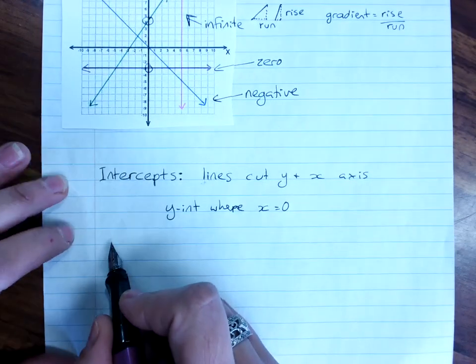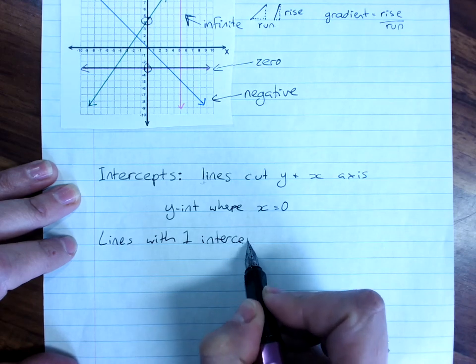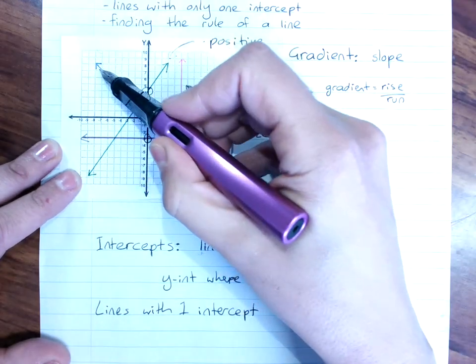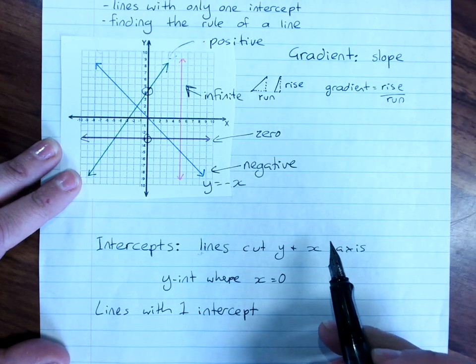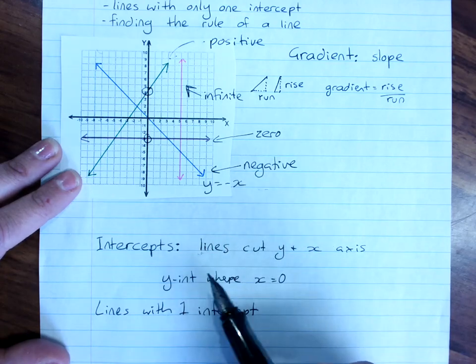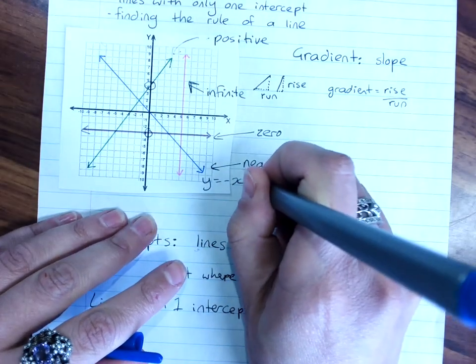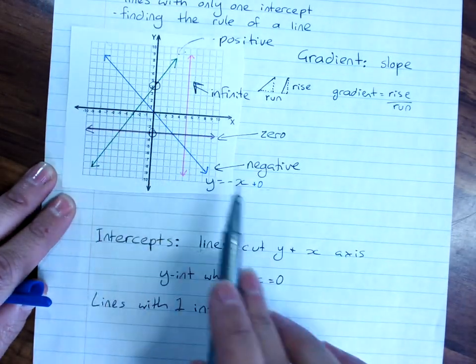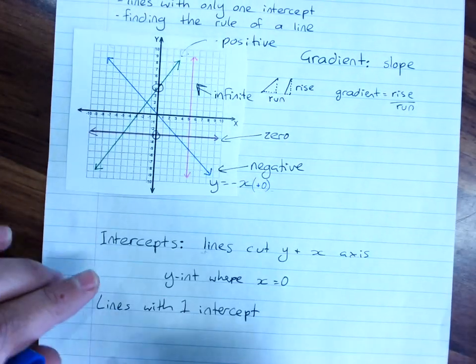Some lines only have one intercept. Those are any lines that go through the origin, (0, 0). So this line here is actually y equals negative x. It has no number at the end of the rule. And the number at the end of the rule gives you the y-intercept. So you can imagine that this actually has the rule y equals negative x plus 0. And where it passes through the y-axis is at 0. So any line that passes through the origin only has one intercept.